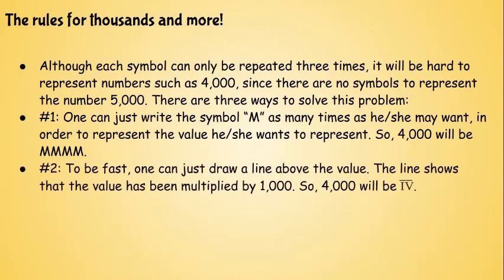Number 2. To be fast, one can just draw a line above the value that they want to show as 1000. The line shows that the value has been multiplied by 1000. So 4000 will just be IV with a line, or an overline, which will just mean that four times 1000.